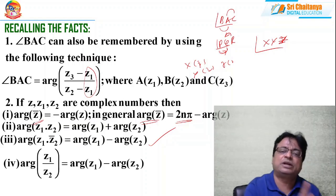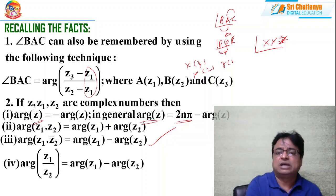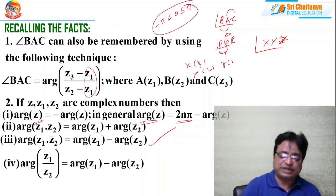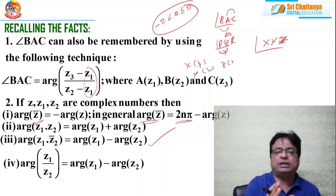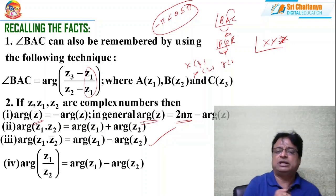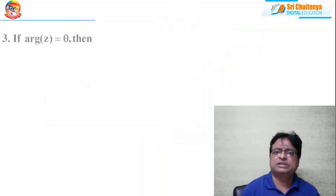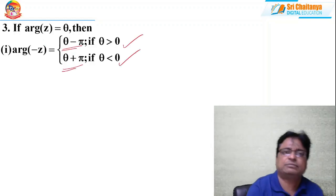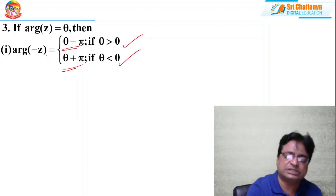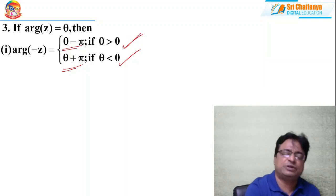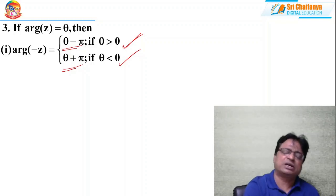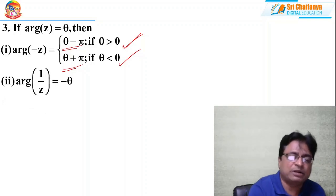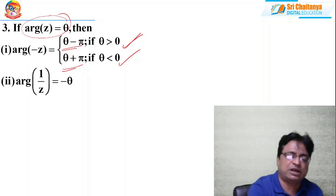If arg(z) = θ, then arg(−z) = θ − π if θ > 0, and arg(−z) = θ + π if θ < 0. Also, arg(1/z) = −θ. These are important for objective-type questions in JEE. For example, if z = 1 + i, then arg(z) = π/4, so arg(1/z) = −π/4.